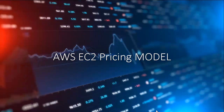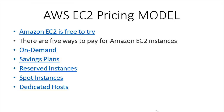In Amazon EC2 instances pricing, the first thing is that Amazon EC2 is free to try — Amazon provides you a one-year free tier subscription to access some services, with some limitations. For example, you can run your EC2 instance around 750 hours per month. So EC2 is free to use for testing or lab purposes. But there are five ways to pay for Amazon EC2 instances.